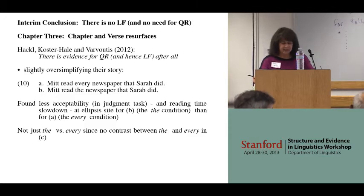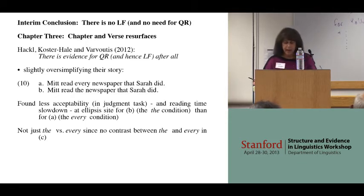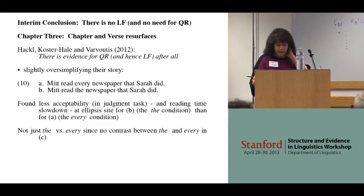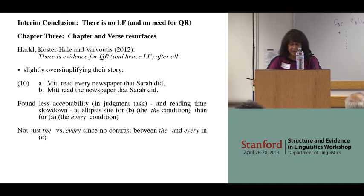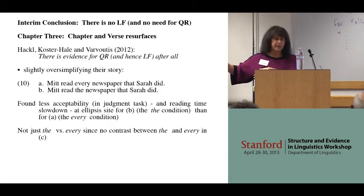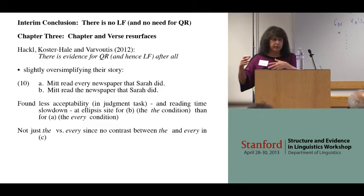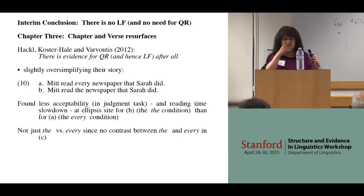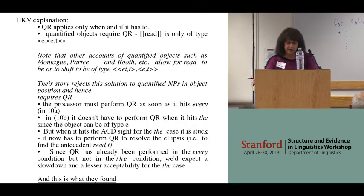The chapter and verse resurfaces recently in a paper by Hackl, Martin, Hackl, Koster-Hale, and Varvudis, published in the Journal of Semantics last year. They try to say they have some new processing evidence for the Sag-type story. Oversimplifying, they're looking at things like 'Mitt read every newspaper that Sarah did' versus 'Mitt read the newspaper that Sarah did.' They find a contrast: in the 'the' condition, there is a slowdown in reading times at the ellipsis site. They find that the 'the' sentences are less acceptable than the 'every' sentences.